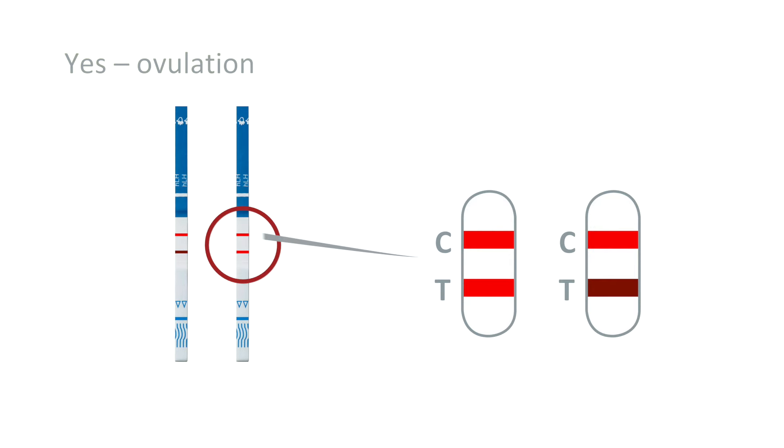Two clearly visible lines indicate ovulation. The intensity of the test line must equal or exceed the intensity of the control line. Ovulation is expected within the next 24 to 36 hours. This is the optimum time for sexual intercourse. No further testing is required during this cycle.